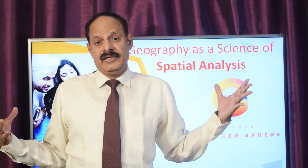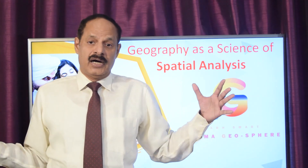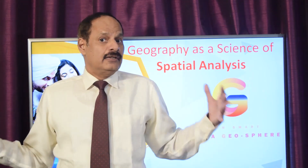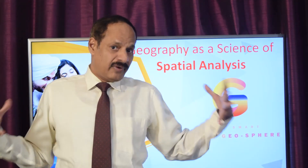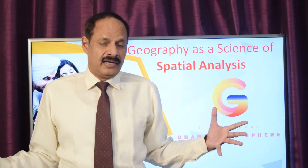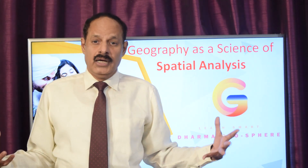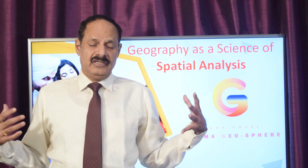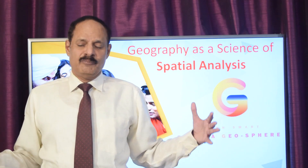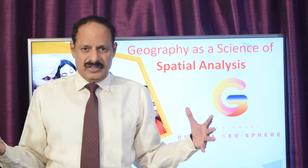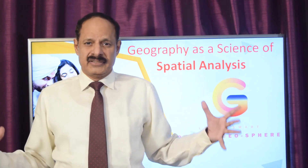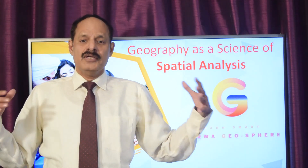Geography as a positivist science began its evolution at Cambridge University, led by two greats in geography — Chorley and Haggett. Haggett and Chorley's contribution has not been asked in exams so far, but they have been very important, as I mentioned in my earlier lecture. There could be a question related to these two or either one of them. They wrote two very famous books: one is 'Frontiers in Geographical Teaching' and the other is 'Models in Geography.'